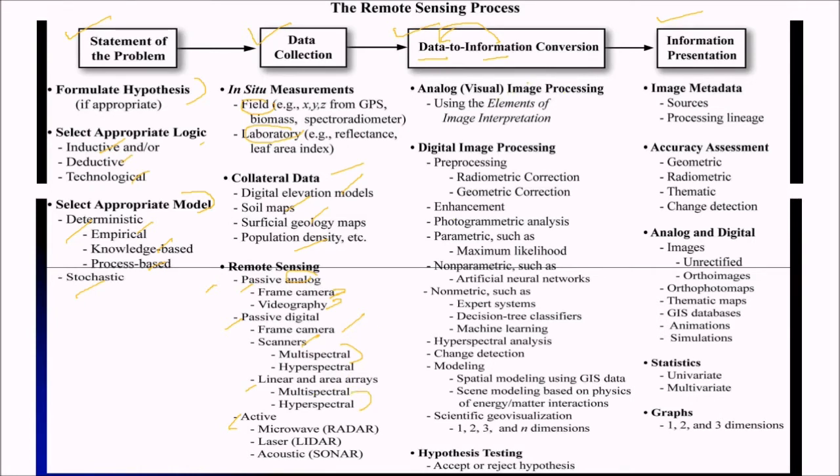Then we can perform analog image processing or DIP, digital image processing. That is pre-processing, enhancement, then the analysis, then parametric, non-parametric, like maximum likelihood or artificial neural network. Non-metric also, like expert system decision tree classifier and machine learning.